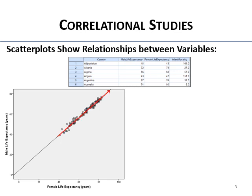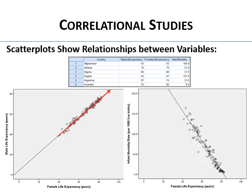That's called a positive correlation — as one goes higher, the other also tends to be higher. Here's the opposite: infant mortality rate per 1,000 live births versus female life expectancy. In countries with high infant mortality, female life expectancy is lowest. In countries with the lowest infant mortality, female life expectancy is highest. When higher values of one are associated with lower values of the other, that's a negative correlation.